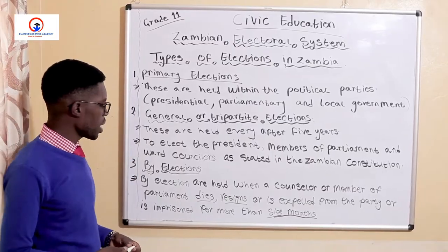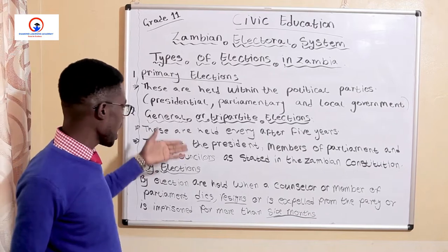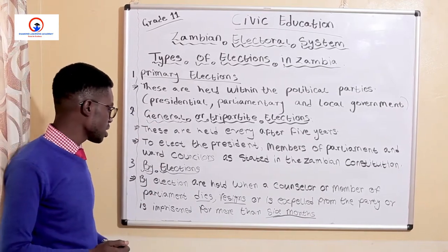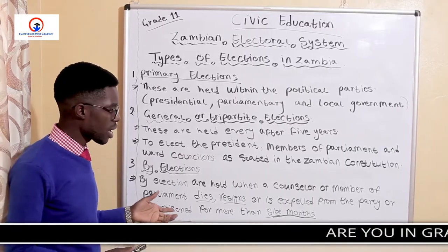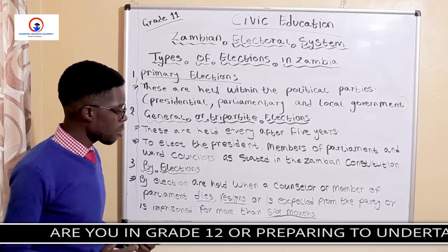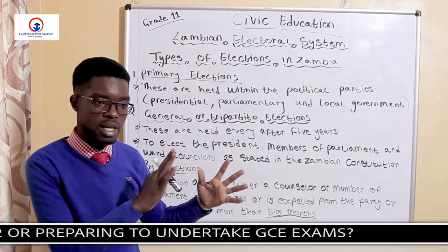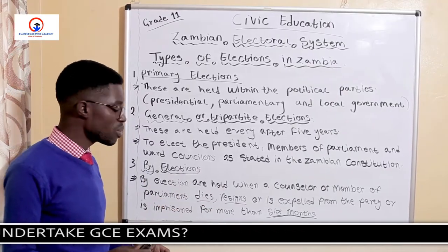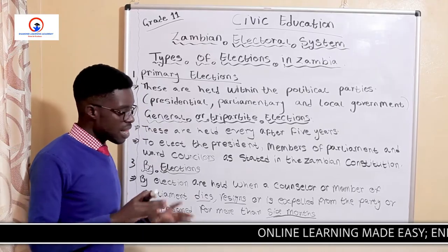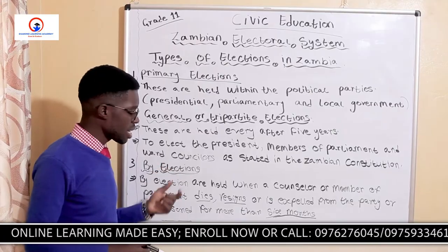The third type is by-elections. By-elections don't have a specific time frame like the general elections. These by-elections are held when a councillor or member of parliament dies. When a member of parliament dies, automatically that constituency would need another representative. So in order to fill in that vacancy, we need to host what is known as the by-elections.